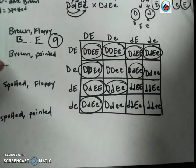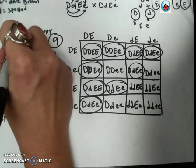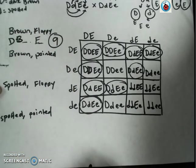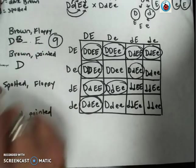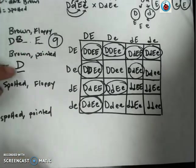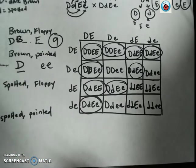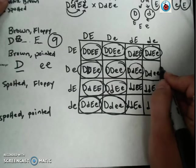Now for brown fur and pointed ears, I'm going to look for all of them that have the dominant allele for fur color, but then be homozygous recessive for the ears. So let's go ahead and search through this. We see that here's one, two, and three.